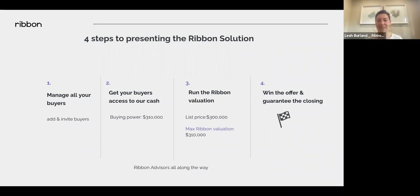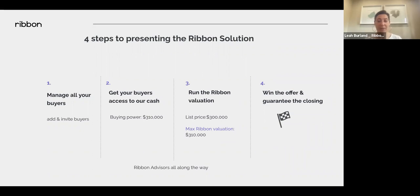When a buyer makes an offer with Ribbon, there's no risk of an under-appraisal forcing the buyer to scramble for funds to cover the gap — Ribbon covers it, and the buyer does not pay us back. There are no catches. If the buyer wants to offer over our Ribbon Max Value, they can, but we don't guarantee it will appraise and they must put the overage into their earnest money deposit upfront. The buyer also gets their rental number back with the valuation, so they can decide whether to move forward.